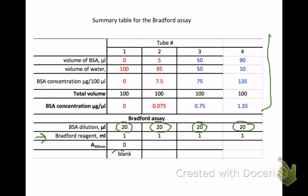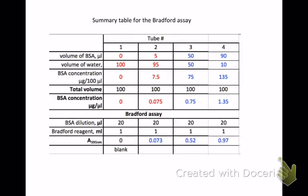Our blank, which had no BSA in tube number one, gives us a reading of zero absorbance. When we read the absorbance for the other tubes — and again these are hypothetical examples — tube two, which had a very small amount of BSA, gave us a pretty low reading of 0.073 at 595 nanometers. For tube three that had 50 microliters of BSA we got 0.52, and when we had 90 microliters of BSA we had 0.97. When I refer to the 90 microliters of BSA in tube four, I'm talking about the original standard.